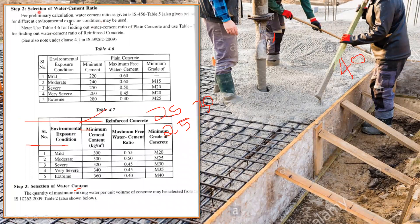Step two is selection of the water-cement ratio. For preliminary calculation, the water-cement ratio is given in IS 456, Table 5, based on different environmental exposure conditions. For example, for severe exposure condition, the minimum grade is M20 and the maximum free water-cement ratio is 0.50. You can take 0.40 or 0.45 — there is no hard and fast rule, but you cannot exceed 0.50 for M20 in severe conditions.